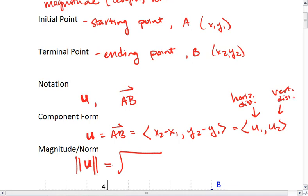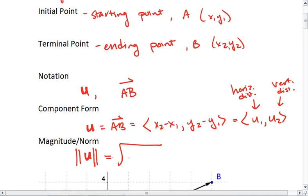Then the way we find the magnitude is the Pythagorean theorem, which is u1 squared plus u2 squared. And we take the square root of that whole thing. And this gives us distance, or length.